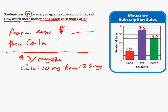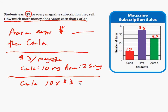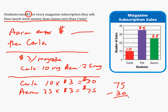That mistake happens not because people don't understand the math, but because they're not reading the question. So I need to figure out how much Carla makes and how much Aaron makes. Carla sells 10 magazines at $3 each — that's $30. Aaron sells 25 magazines at $3 each — that's $75. Aaron makes $75 and Carla makes $30, so $75 minus $30 equals $45. Aaron earns $45 more than Carla.